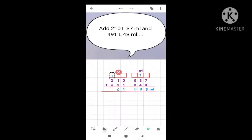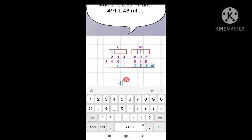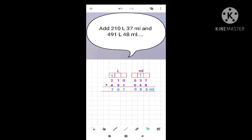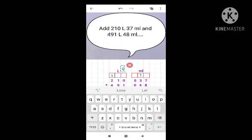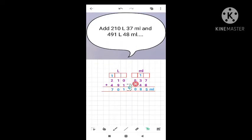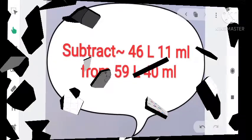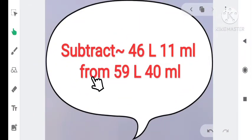So let's add these values. 1 plus 1 plus 2 plus 4, it makes 7. This is the addition of liter. So we have to mention the unit here. So the answer is 701 liter and 85 milliliter.